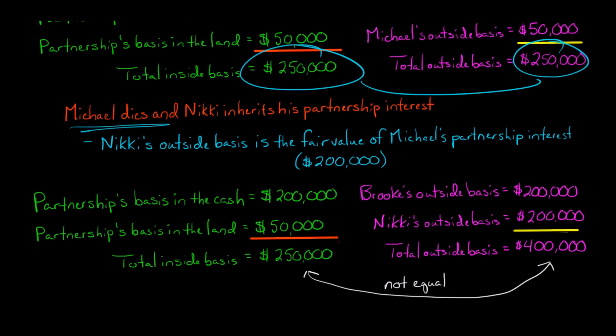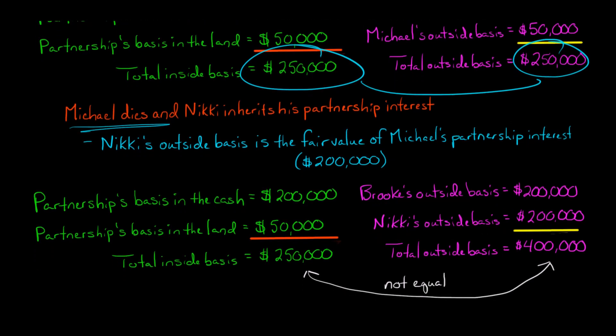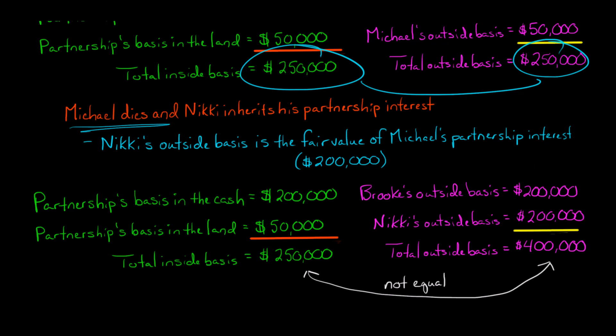When Nicky comes in, her outside basis is $200,000 and Brooke's outside basis is $200,000. So the total outside basis — if you add up each partner's outside basis — is $400,000.